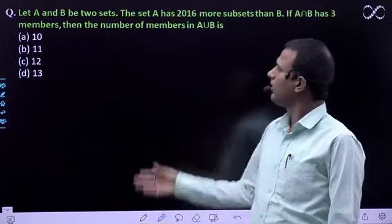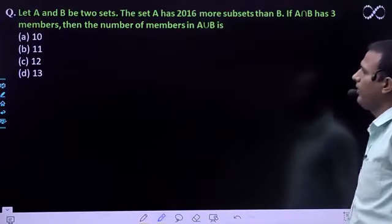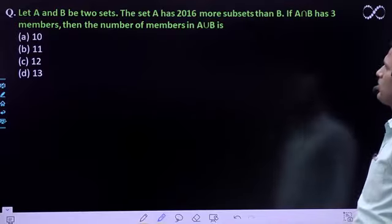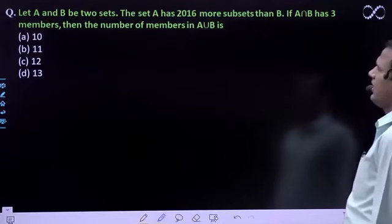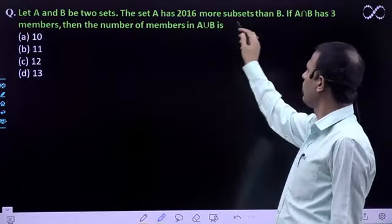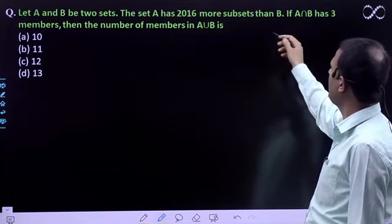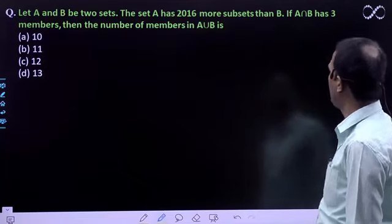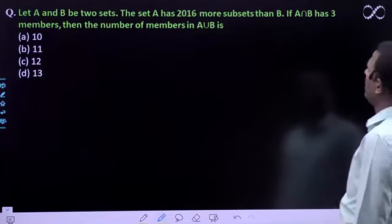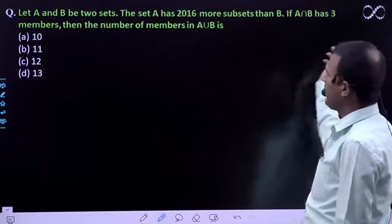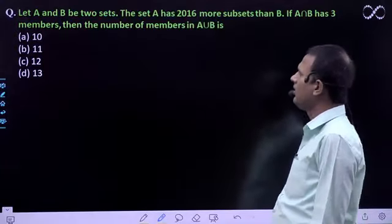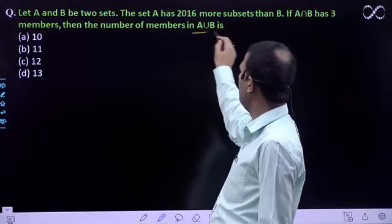Hello students. Let A and B be two sets. The set A has 2016 more subsets than B. If A intersection B has three members, then the number of members in A union B is...